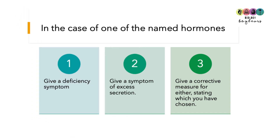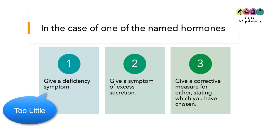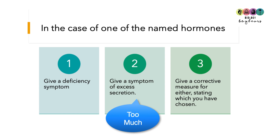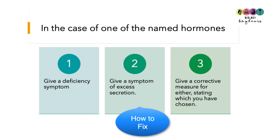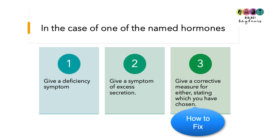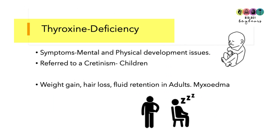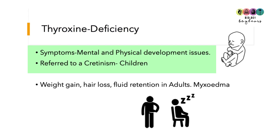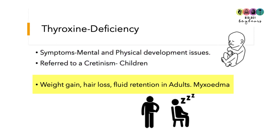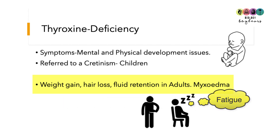The next question: in the case of one named hormone — thyroxine — give a deficiency symptom, a symptom of excess, and a corrective measure for either. For deficiency of thyroxine: if a child has too little thyroxine they can have physical and mental developmental issues, referred to as cretinism. In adults, symptoms of too little thyroxine include weight gain, hair loss, fluid retention, and fatigue, together known as myxedema.